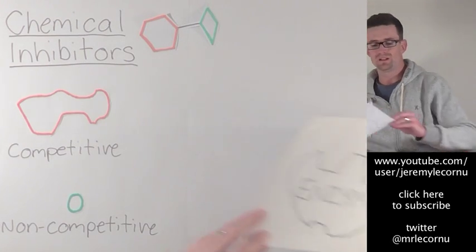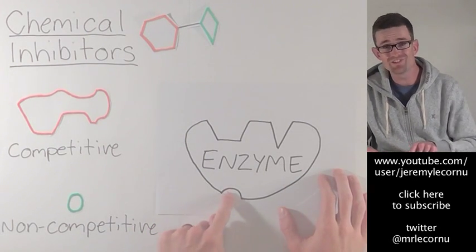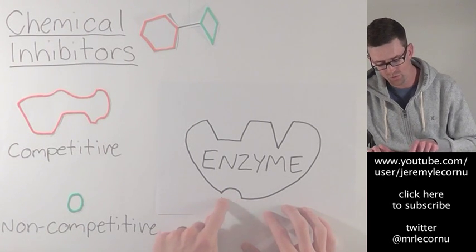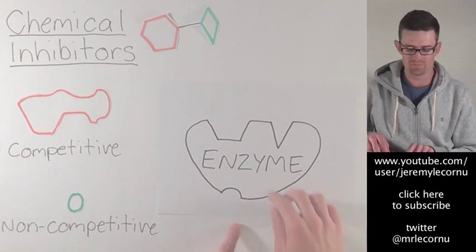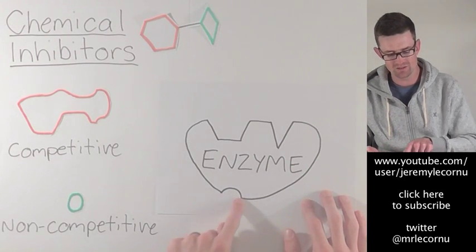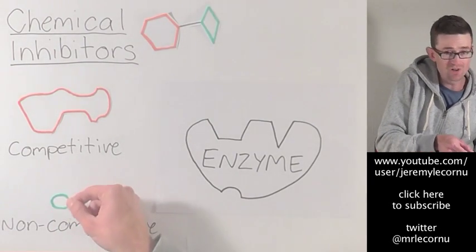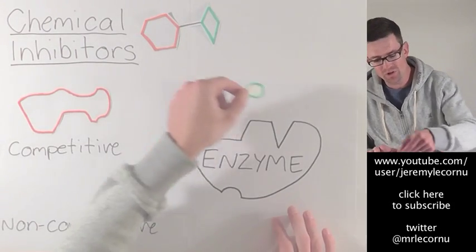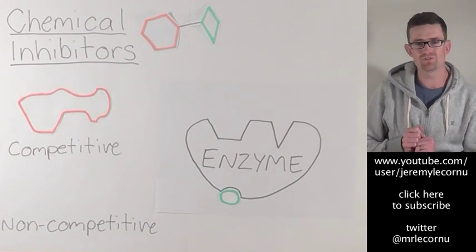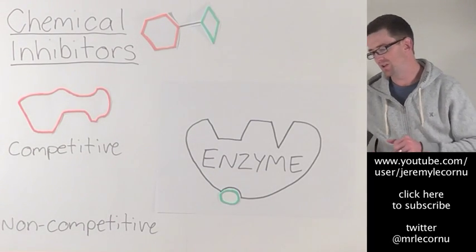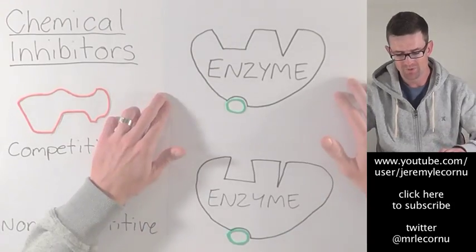Enzymes are not as simple as my diagram might indicate. This is an enzyme, and what I'm showing you is that enzymes actually also have an alternative binding site — not the active site — and it's elsewhere on the enzyme. It's a different shape altogether. What can happen sometimes with enzymes is our non-competitive inhibitor has no interest in the active site, but it does have a complementary shape to our alternative site. And when it binds with the alternative site, it causes the enzyme to change shape.